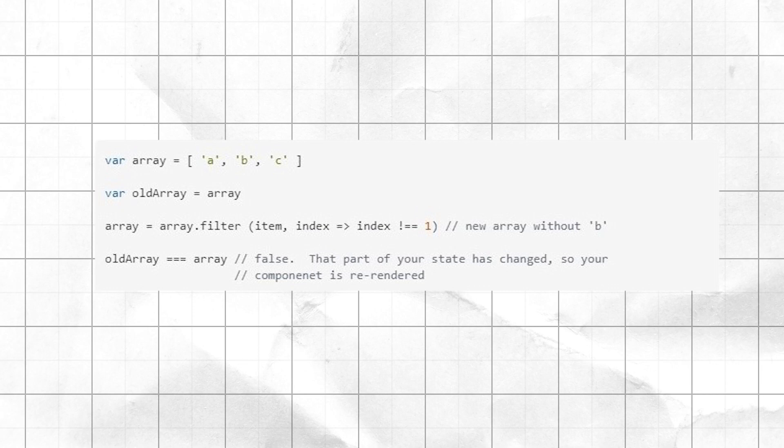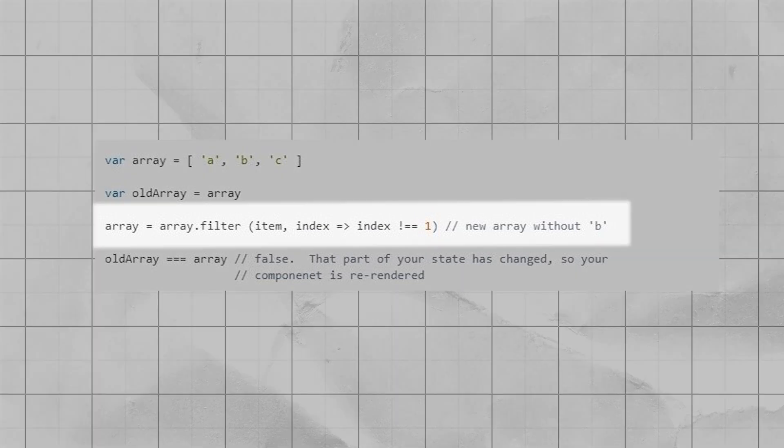What does that mean tangibly though? It means that you're usually going to be storing your state in an array or object, and when you make updates to state, instead of updating that array or object directly, you actually want to make copies of them — by using the spread operator, or by using Object.assign if you want to be a little old-fashioned.